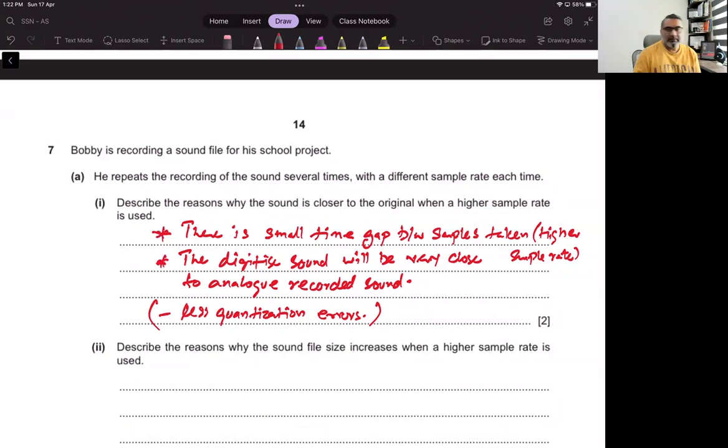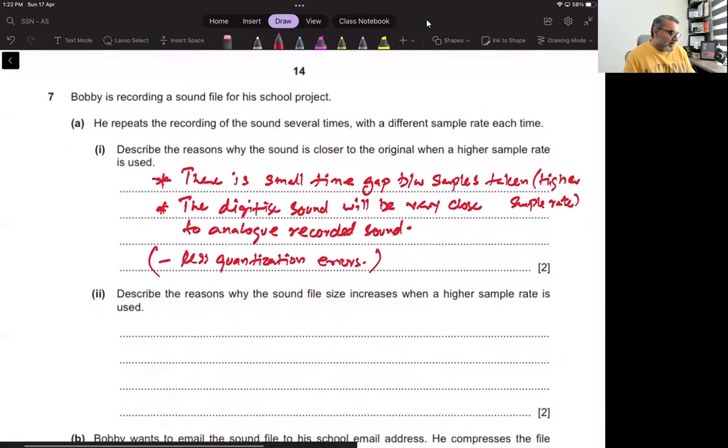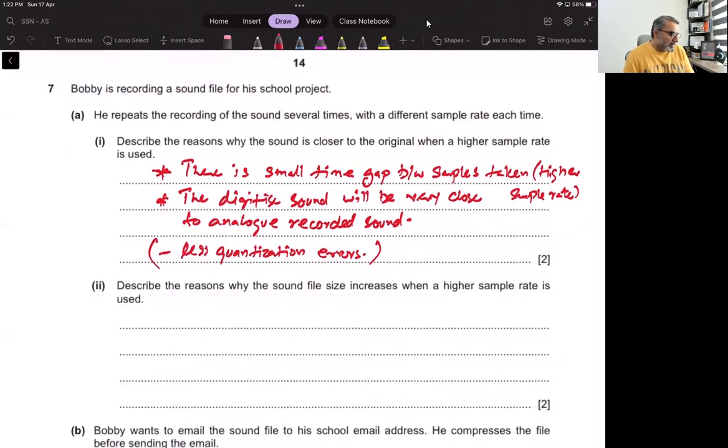So when we record more, there will be less gap. When there will be less gap, the recorded data will be close to the analog data. That is why when higher sample rate is used, the sound looks like it is actually original.